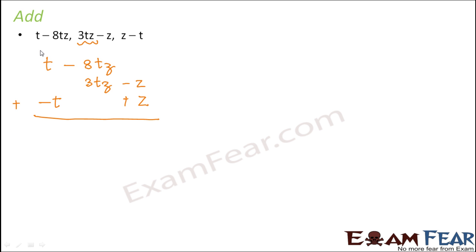So what we have done now, we have to add all of these. See all the terms with t are in the first column, all the terms with tz are in the second column and all the terms with z are in the third column. So now what we do, t plus minus t. What would it give? It would be 0.